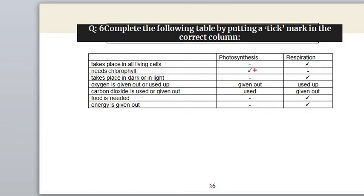Next: 'Needs chlorophyll.' The correct option is Photosynthesis, since respiration is the exchange of gases and does not need chlorophyll. Next: 'Takes place in dark or in light.' This process occurs in both dark and light, so the correct answer is Respiration. Next: 'Oxygen is given out or used up.' During photosynthesis oxygen is given out, so the correct answer is Photosynthesis.